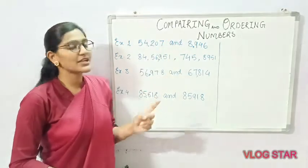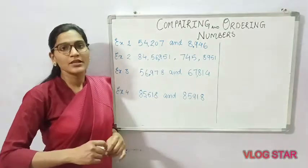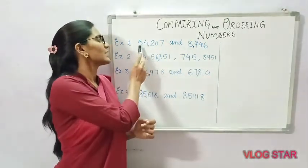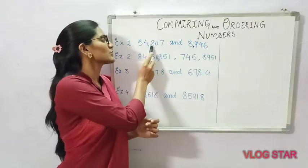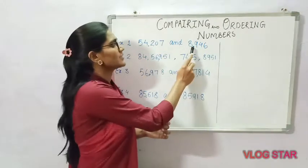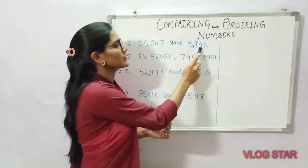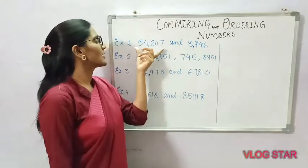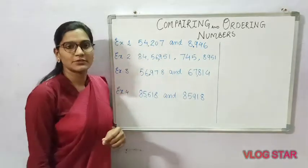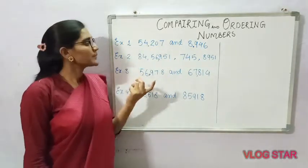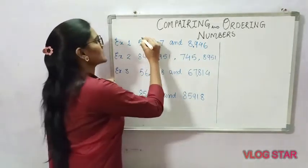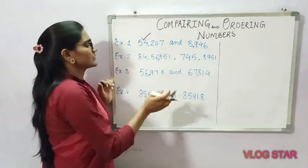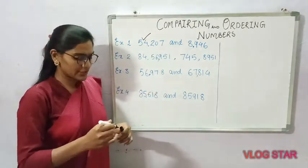it is very easy to understand by looking that the five-digit number is bigger, because the number of digits is more. Here we count one, two, three, four, five — and there one, two, three, four. So this four-digit number is smaller and this five-digit number is bigger.